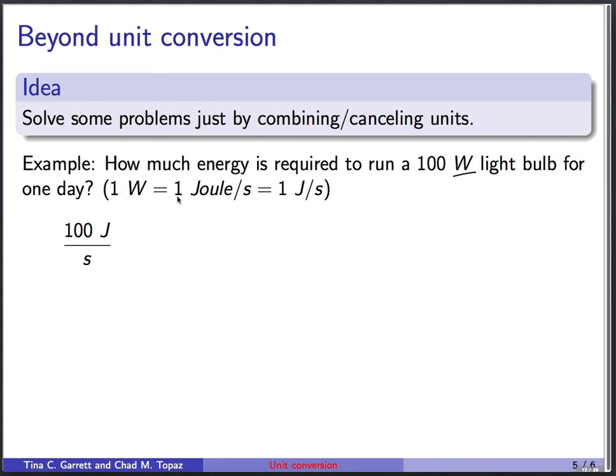So 1 watt turns out to mean 1 joule per second, where joules, which we can represent with a capital J, are a measure of energy. So watts are energy per time. And we want to know how much energy is used up by a 100 watt light bulb running for one day. So I'm going to start out with our 100 watts, or 100 joules per second.